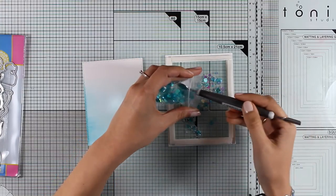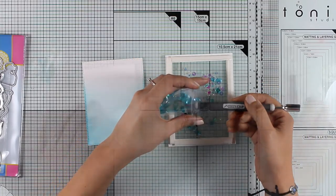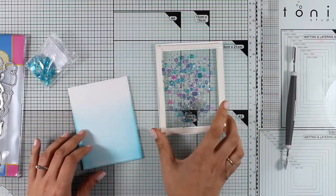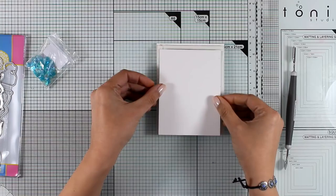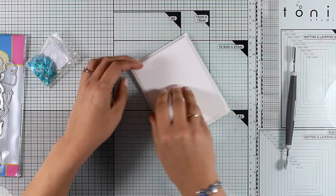I'm going to cover up the window with this paper that I prepared earlier, and now all the sequins are nicely secured inside.